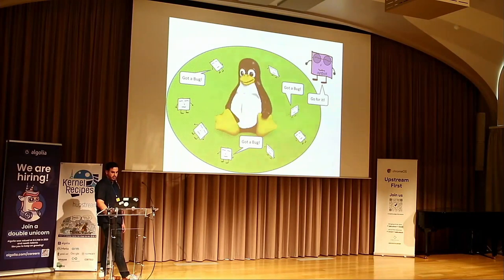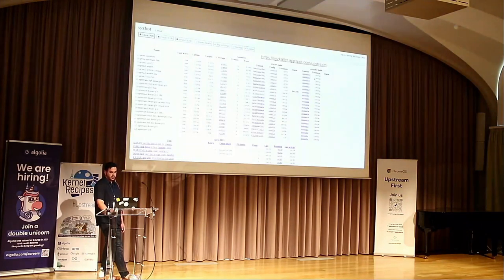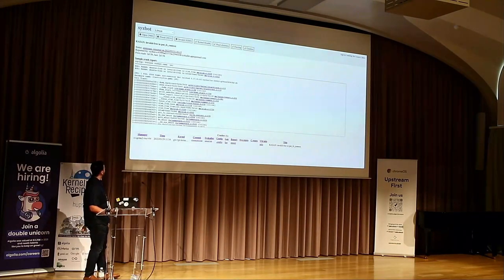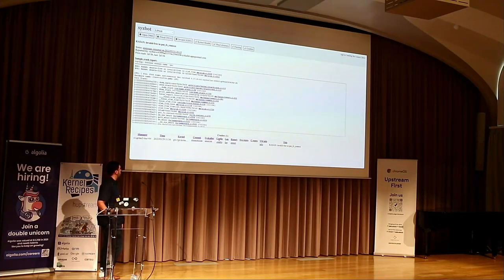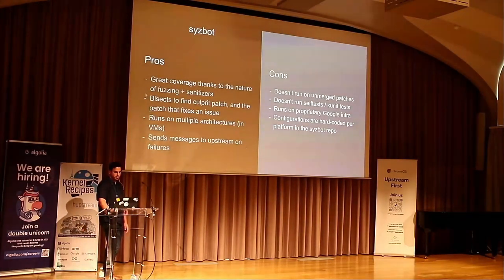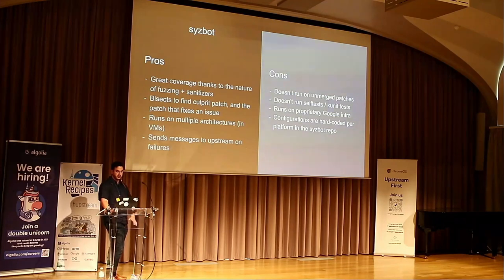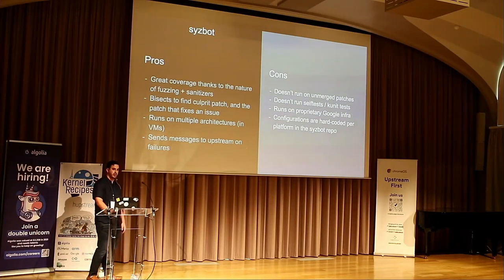Sysbot is the Google fuzzer — really useful, finds tons of bugs. It has nice pros like it bisects and runs on multiple architectures. If you go to the dashboard and look at a failure, it tells you exactly what sanitizer failed or what issue the fuzzer found, and you can reproduce. It also links you to Bugzilla if you need, and sends emails to the upstream list. To me, the biggest con is that it doesn't really run tests that developers and maintainers are adding — it's a bit harder to quantify exactly how they should be interpreted when talking about the stability of branches you're working with.